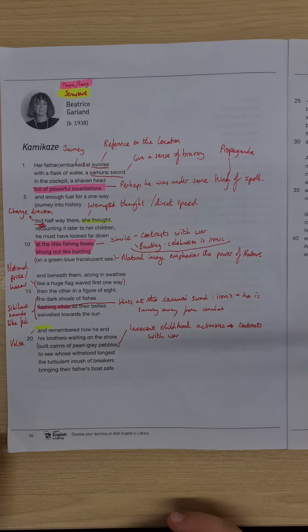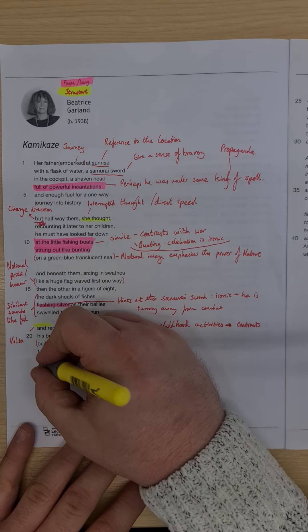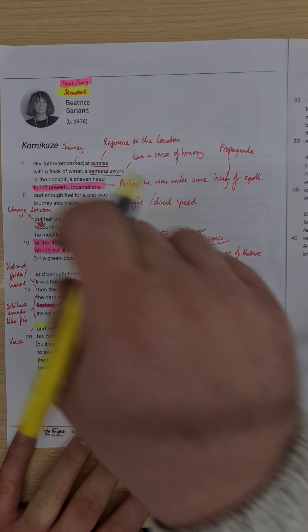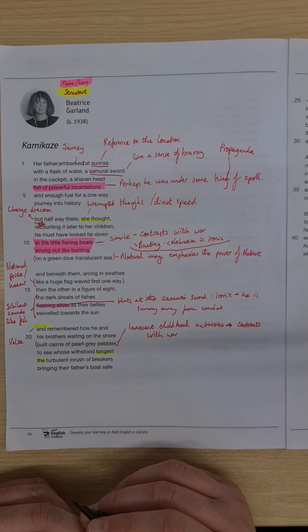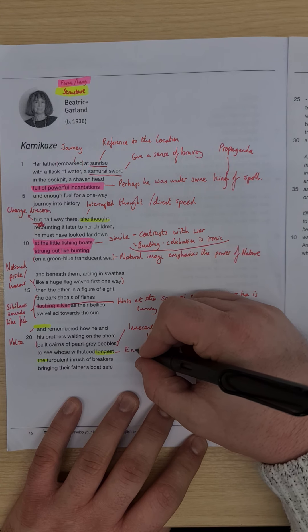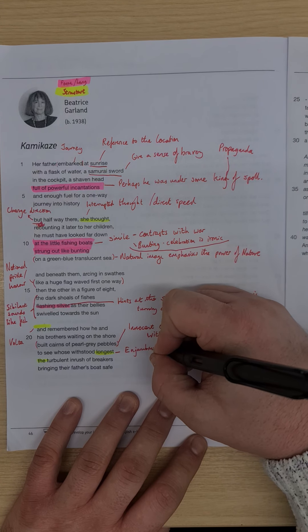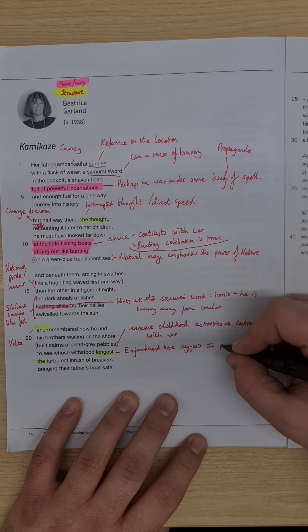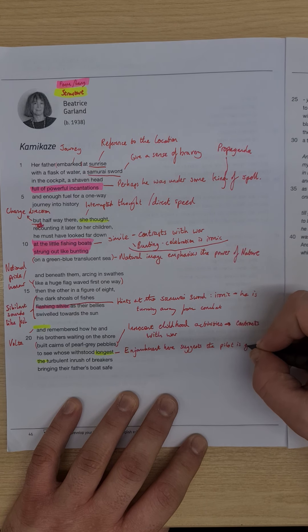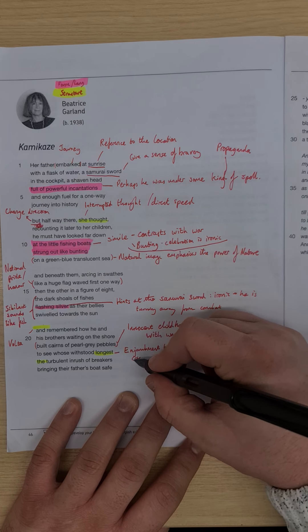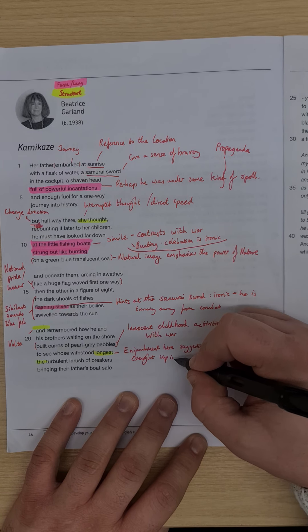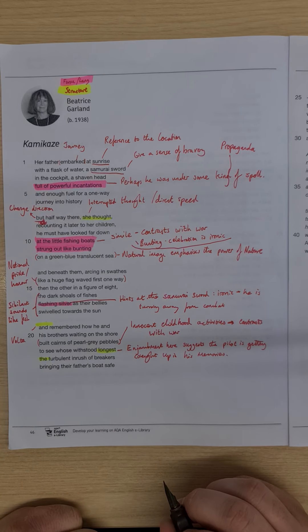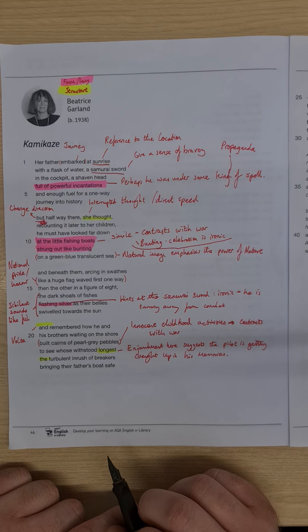To see whose withstood longest the... And we have here this really unusual enjambment. The poem so far has worked within the lines, but the stanzas all enjamb. However here, we have the enjambment of 'longest the.' And this enjambment and the lack of punctuation here, it's like, suggests that the pilot's getting caught up in his memories.